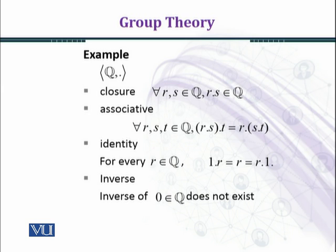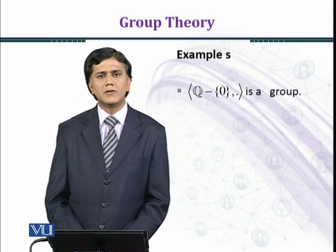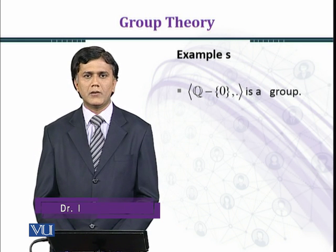Now we check whether the inverse law is satisfied. If you look at non-zero rational numbers, the inverse law is satisfied. For example, if you take 5 over 7, its multiplicative inverse is 7 over 5. However, the multiplicative inverse of zero does not exist here. Therefore, the inverse law is not satisfied for one element, and so Q does not form a group under the binary operation multiplication.